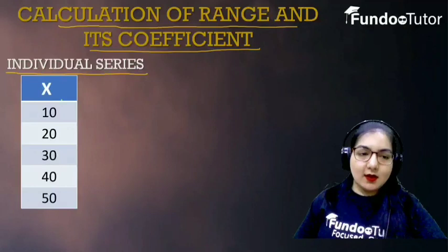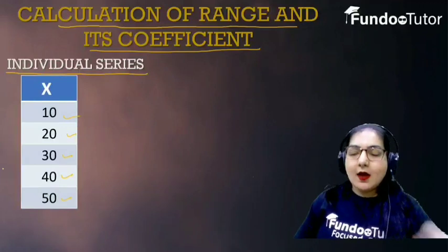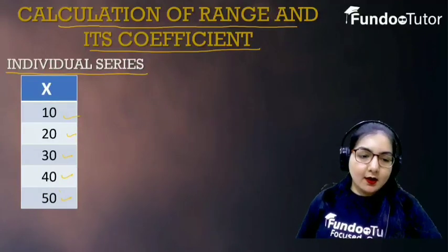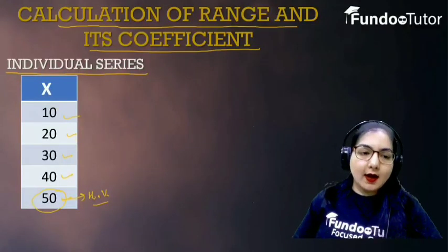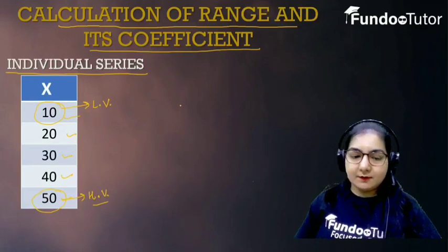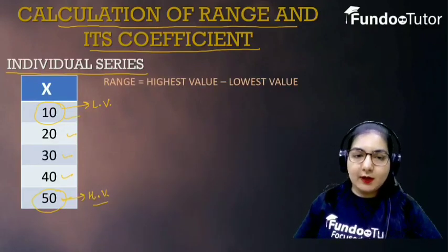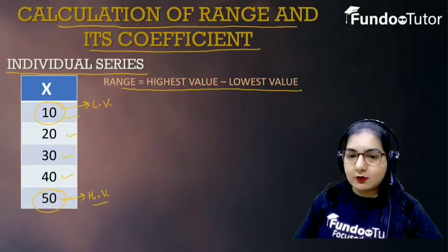In individual series, you have X values given as 10, 20, 30, 40, and 50. First of all, you have to mark the highest value of the series, denoted as HV, and the lowest value of the series, denoted as LV. So, the lowest value is 10 and the highest value is 50. Then you apply the range formula: range is equal to highest value minus lowest value.